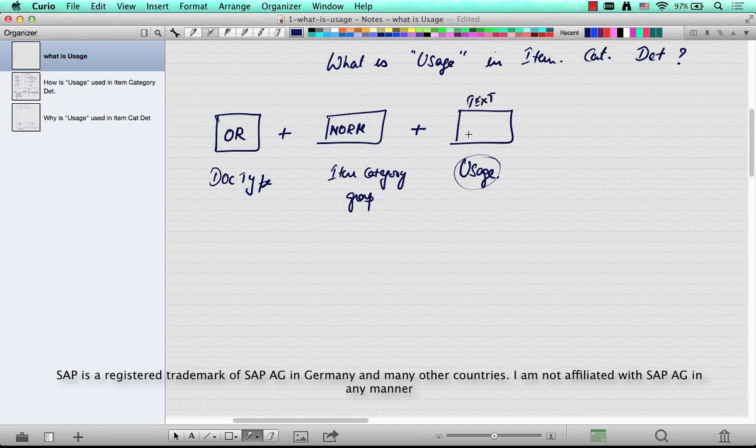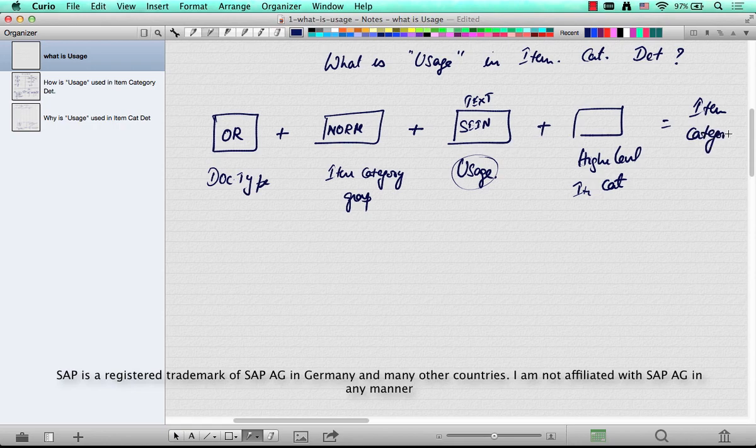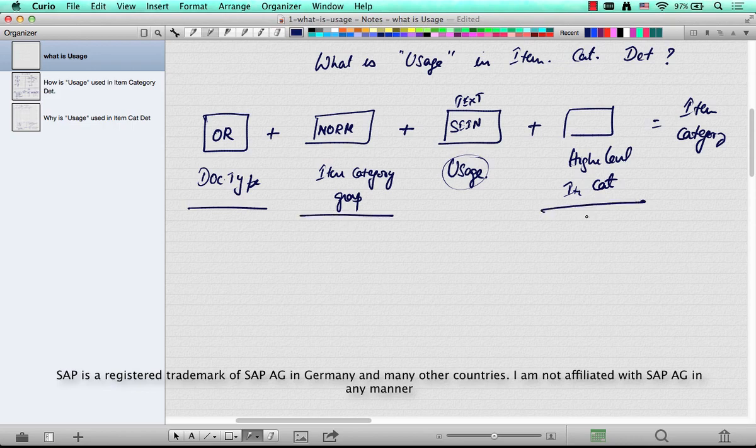Some examples of usage are text, SEIN, and so on. And of course, the fourth parameter is the higher level item category. So based on these four parameters, SAP determines what's called the item category. We know what the document type is, we know that item category group comes from the material master, and this is in the case of a BOM.